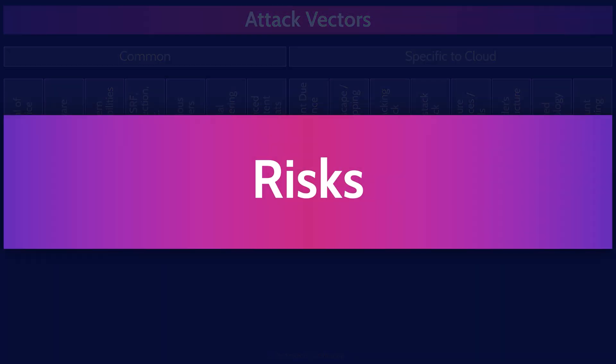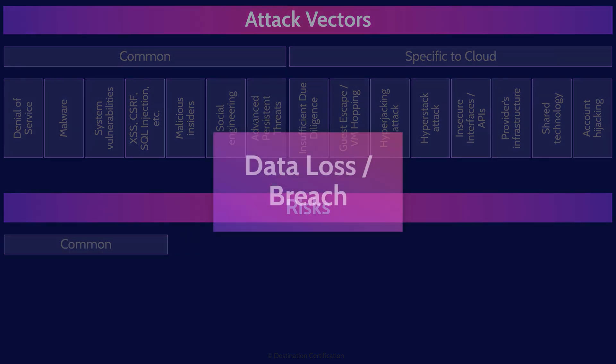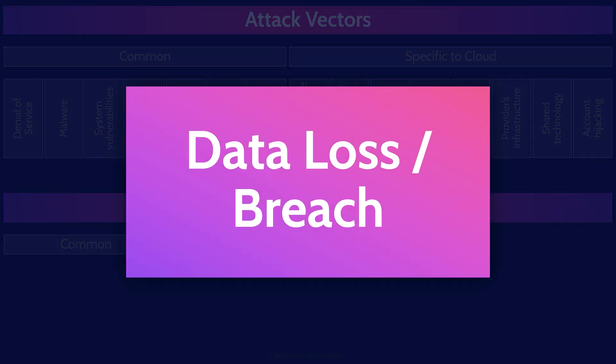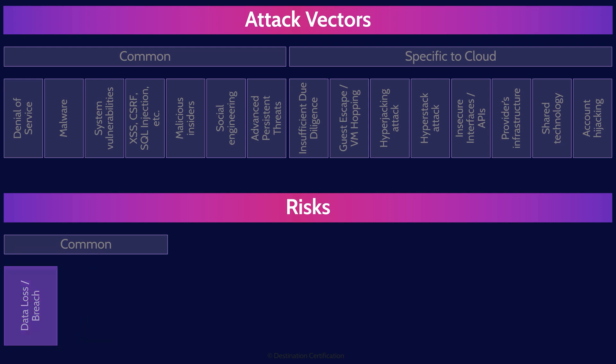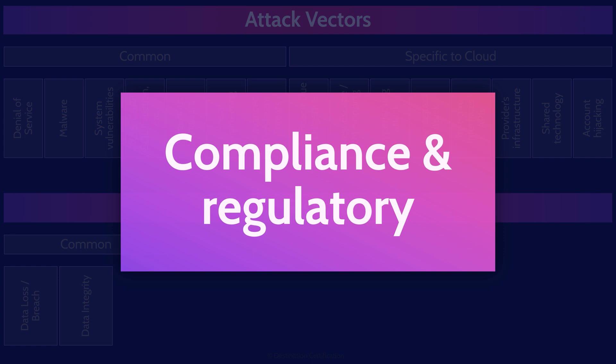Now let's move on to a list of risks — starting with common ones, then getting into cloud-specific risks. Data loss involves data becoming corrupted, deleted, or made unreadable. A data breach is when information is stolen or taken from a system without the knowledge or authorization of the system owner. Integrity is a critical property meaning data hasn't been tampered with or manipulated. Compliance is also important yet challenging — the international nature of cloud services makes it easy to store data in many countries, but we must abide by the regulations of each jurisdiction, as restrictions can vary significantly from country to country.